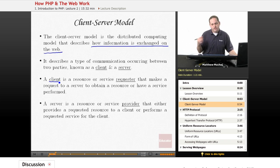Basically, a client is what's known as a resource or service requester, and a client makes a request to a server to obtain a resource or to have a particular service performed. On the other side of things, a server is a resource or service provider that either provides a requested resource to a client or performs a service requested by the client.